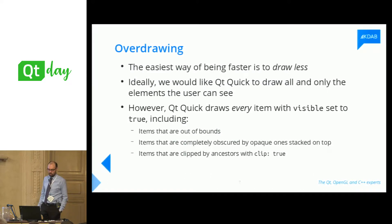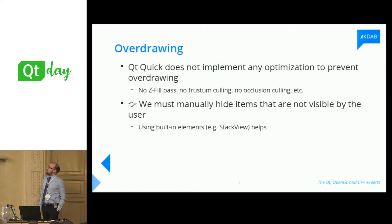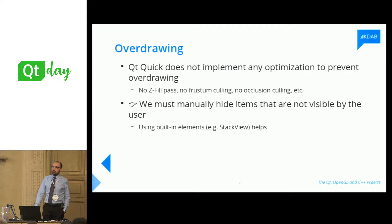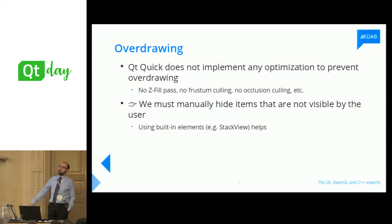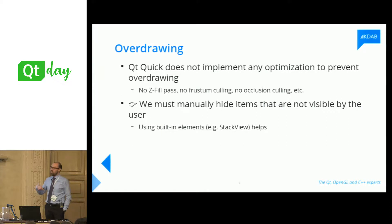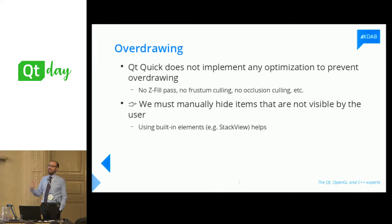Qt Quick will draw elements the user cannot see — elements completely out of bounds, elements completely obscured by opaque elements stacked on top, elements that are clipped. The obscured ones are actually the worst because you pay the most for that, and it tends to happen all the time. Qt Quick does not implement any optimization to avoid overdraw — it simply renders every visible item. This means we, as developers, must manually set visible to false for each item the user cannot see at any given moment.